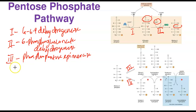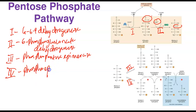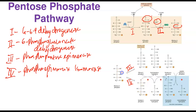In step 4, another isomeric enzyme — ribulose-5-phosphate epimerase — converts ribulose-5-phosphate to xylulose-5-phosphate. What happens is that the configuration at one carbon is changed from right to left. Ribulose-5-phosphate and xylulose-5-phosphate are epimers of each other. These isomerization reactions are the non-oxidative phase of the pentose phosphate pathway.